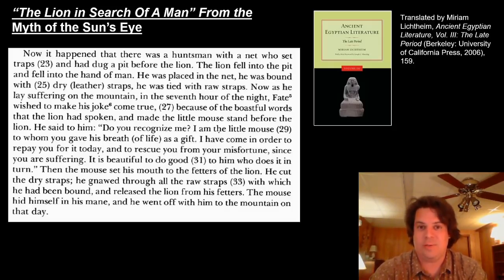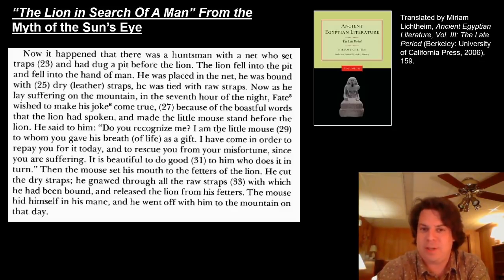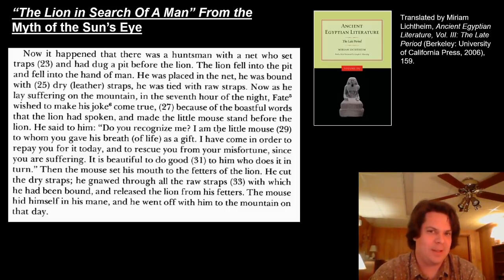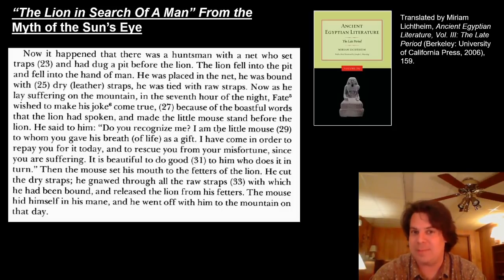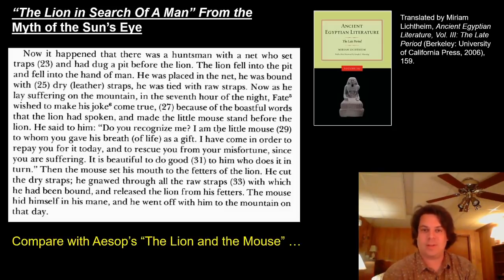He meets a mouse on the way and is about to crush it — a raw expression of blunt power. The mouse says: don't do that to me; I know I'm inferior, but you might need me someday. Maybe you know what's going to happen — and that's another part of storytelling: it's fun to know what's coming and see how it plays out. The lion gets trapped by the man in a net, the mouse comes along, chews the net up, and the lion escapes. You probably recognize this from Aesop — Aesop's fable, The Lion and the Mouse. This fable is found in the collection of Aesop from ancient Greece, and also in ancient Egypt.